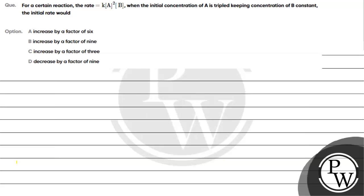Hello, Bacho. Let's read this question. The question says, for a certain reaction, the rate is equals to rate constant into concentration of A raised to the power 2 into concentration of B, and the initial concentration of A is tripled. Keeping concentration of B constant, the initial rate would...